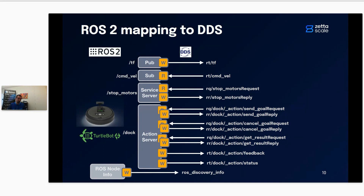For both, you have one topic for the request and one for the reply. A service server creates one data reader on the request topic and one writer on the reply topic. An action is a composition of several ROS interfaces: three services — one to send the goal, one to cancel the goal, one to get the result — plus two publication topics, one for feedback and one for the action server status.